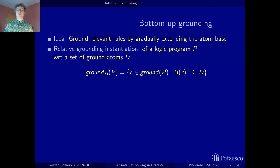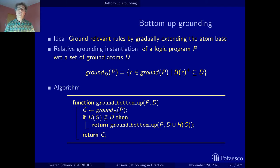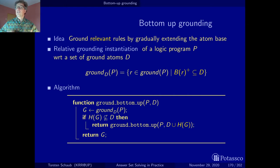We implement this behavior with a function called ground_bottom_up. This function takes two parameters: the original non-ground logic program and the atom base. Keep in mind that while the atom base will be increasing over time, the non-ground logic program will remain the same. For the very first call, we have our non-ground program plus the atom base composed of the heads of the facts given by the problem instance — noting there is a difference between facts and atoms.